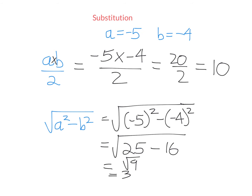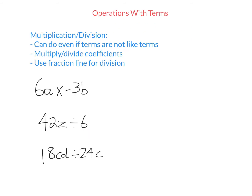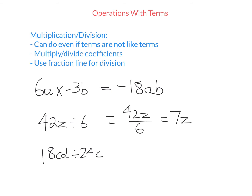Let's now move on to operations with terms. Terms are just sequences of numbers called coefficients and letters called pronumerals or variables. When we're multiplying or dividing terms, it's actually pretty easy. All we do is multiply or divide the coefficients. These operations are easier because we don't need to worry about whether or not the terms are like terms. So for 6a times negative 3b, I just go 6 times negative 3 — positive times a negative is a negative — and then I write the pronumerals. For 42z divided by 6, it might be easier to write it as a fraction. 42 divided by 6 is 7, and then I write the pronumeral.